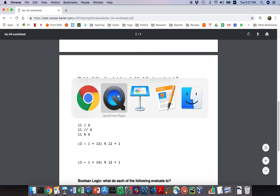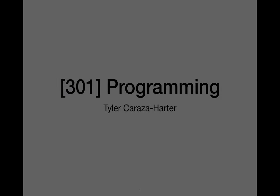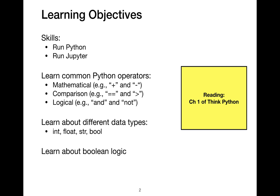We're going to learn a little bit about programming today — how to run Python. There are many ways to run Python; one of them is Jupyter Notebook, which we've already used in Project 1. We're going to learn about operators: you've seen mathematical operators before like plus and minus, but we're also going to learn about comparisons and logical operators, which might be new to many of you. Finally, we'll learn about different types of data in Python programs.